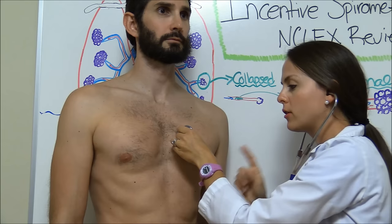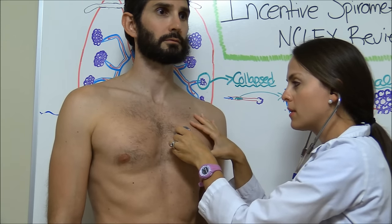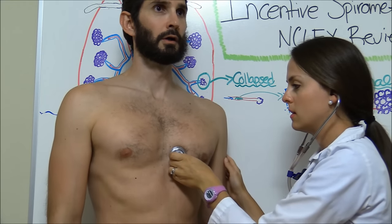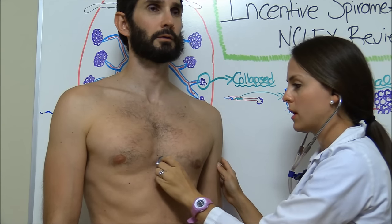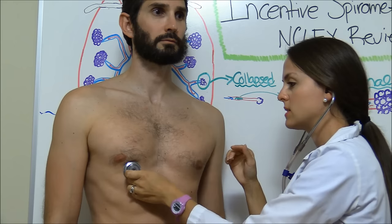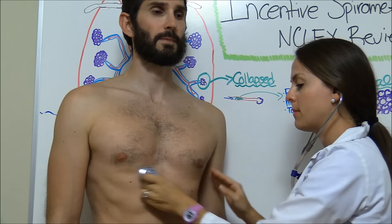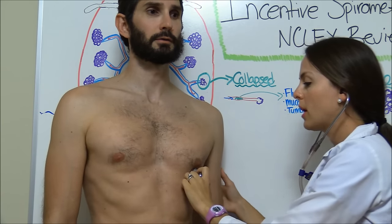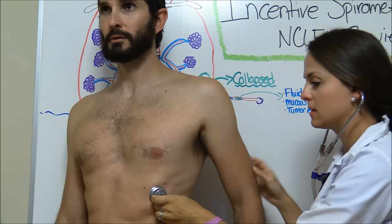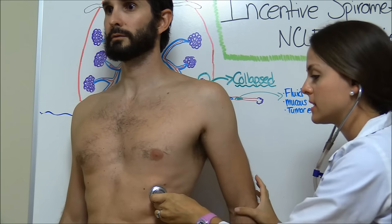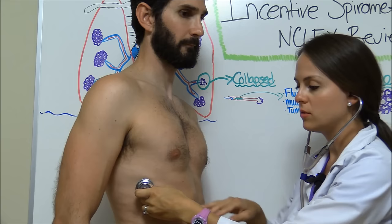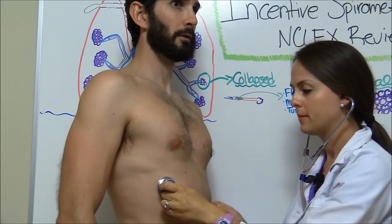Now we're going to go down to the fourth intercostal space. We're still going to be in the upper lobe of the left lung, but now we're going to be in the middle lobe of the right lung. Then we go over here and compare. Then we'll go down to about the fifth intercostal space, still assessing that middle lobe, and compare sides. Now we're going to go mid-axillary, down in our lower lobes at the sixth intercostal space. We're going to compare sides, going mid-axillary. Then we're just going to go down a little bit to stay in that lower lobe, and then compare sides.